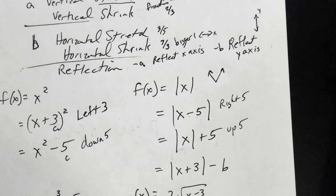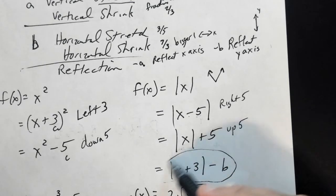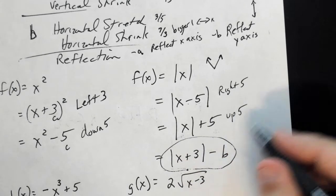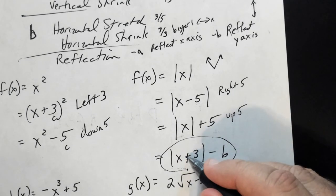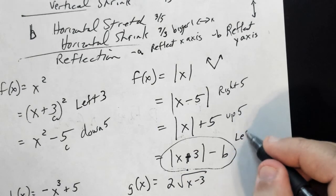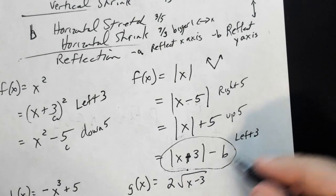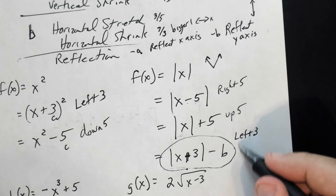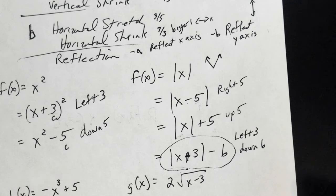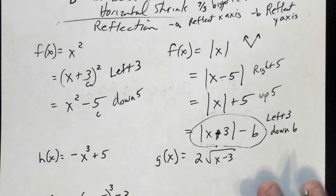When two things happen together: a plus 3 inside is a left 3, and a minus 6 outside at the end is a down 6. You'll be able to see both of those transformations when you put them in your calculator.